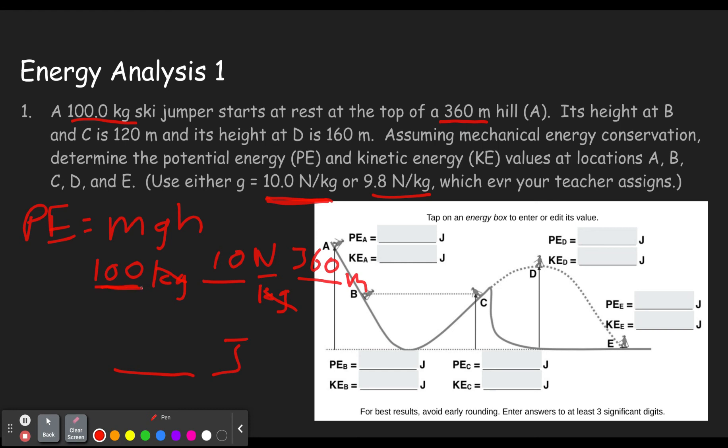So 100 times 10 times 360 gives us 360,000 joules.